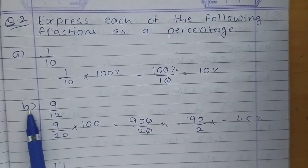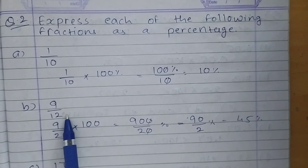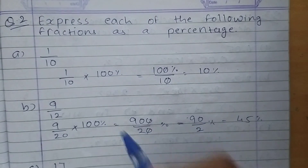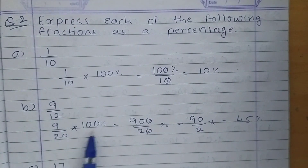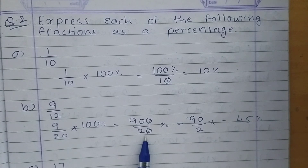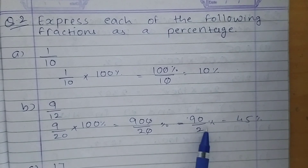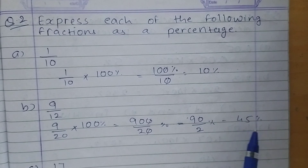Part B: 9 upon 12, multiply 100%. 100 nines are 900%, divided by 12. Cancel the zeros — 90 upon 2%. What is the half of 90? Yes, 45. So 45% is the answer.